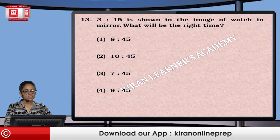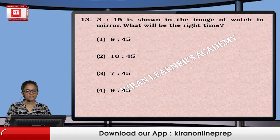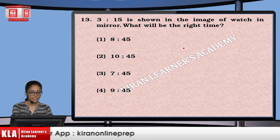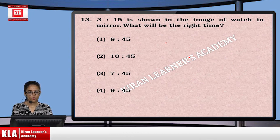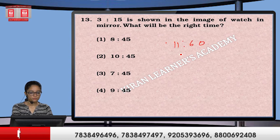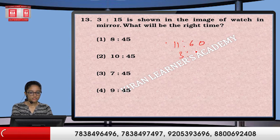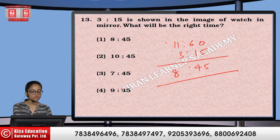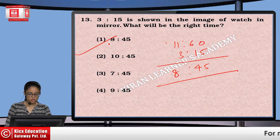Next: 3:15 is shown as the image of a watch in a mirror. What will be the right time? For the mirror image, we subtract the given time from 11:60. So 60 minus 15 = 45, and 11 minus 3 = 8, giving 8:45. The answer is the first option.